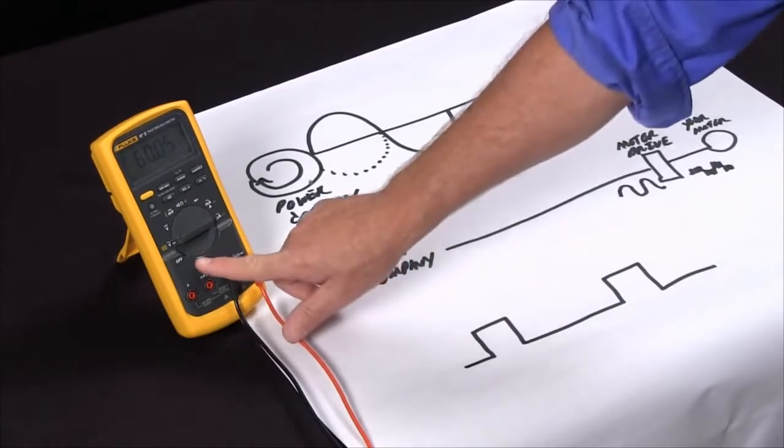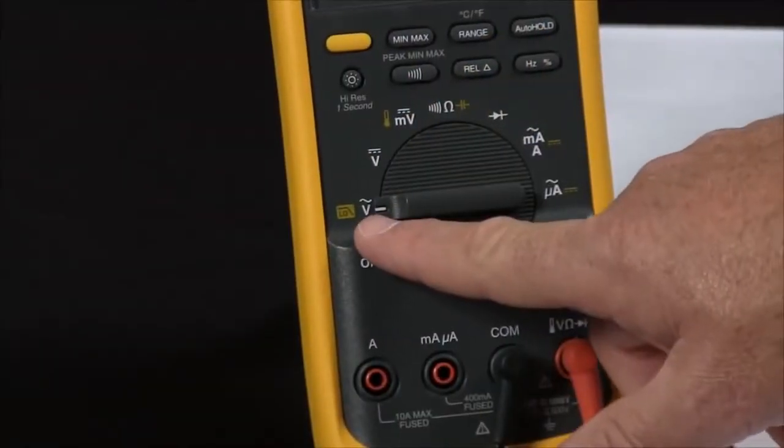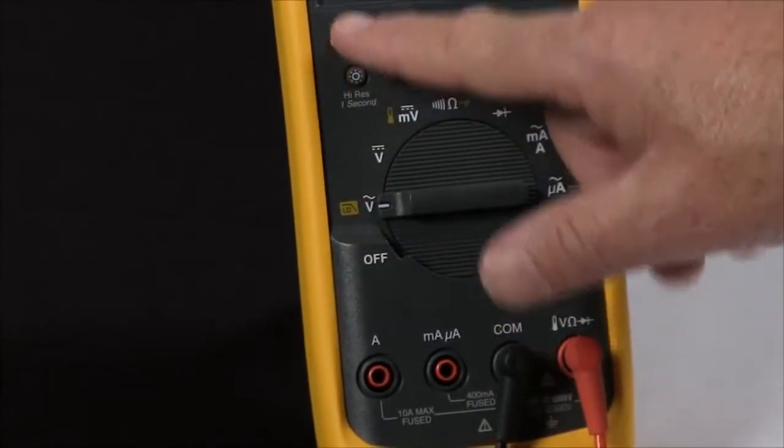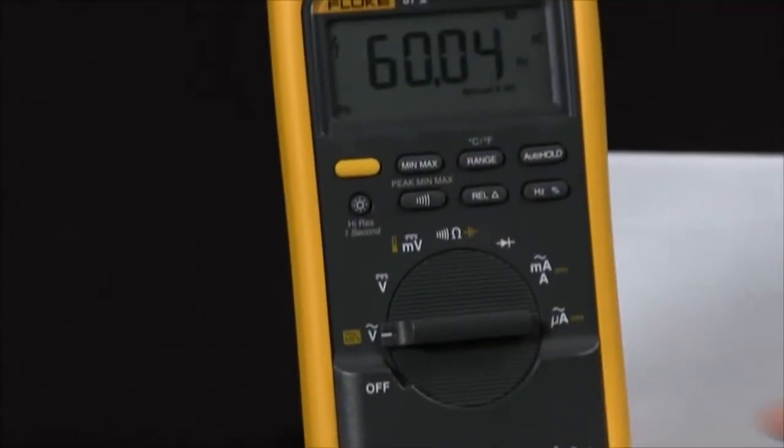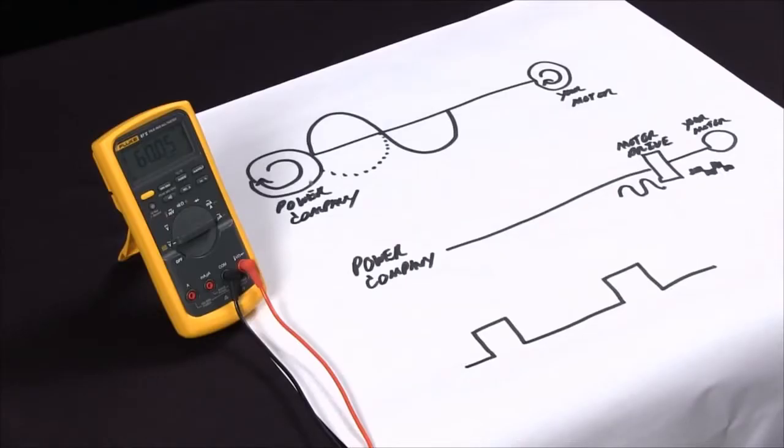We added a feature on the Fluke 87.5 and our 1587. If you see next to the AC volts, there's a low pass. By hitting this yellow button, what I've done is I've now converted this into a special measurement mode that will measure this pulse width modulated signal accurately, giving you the frequency. So you can see if the motor is truly at full speed at 60 Hertz,